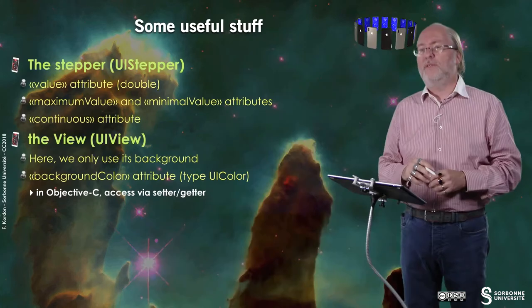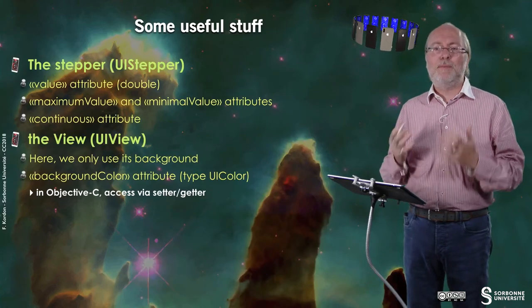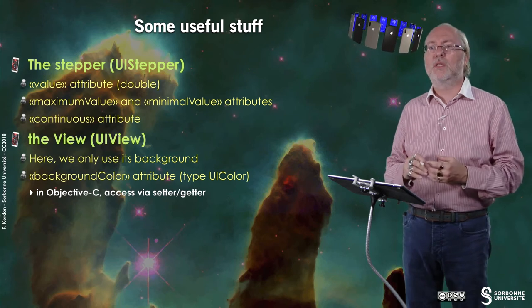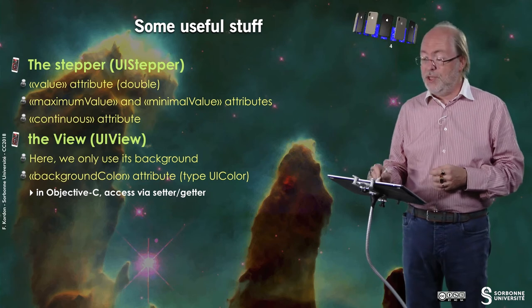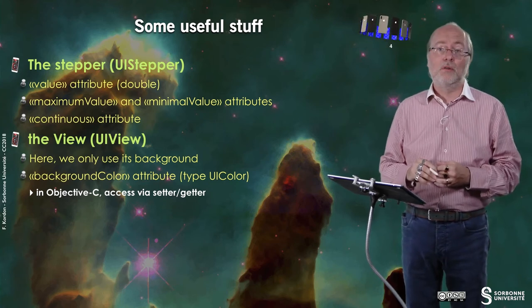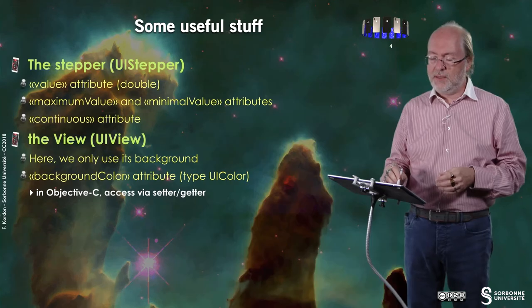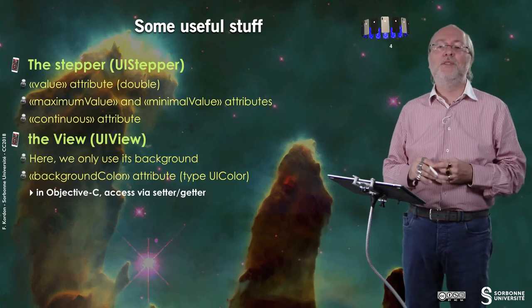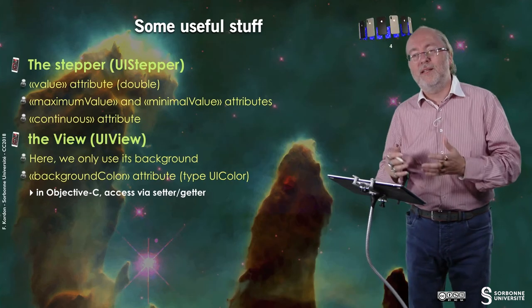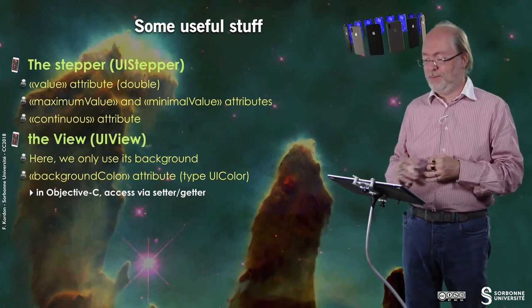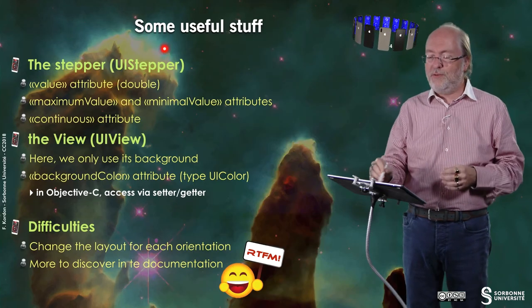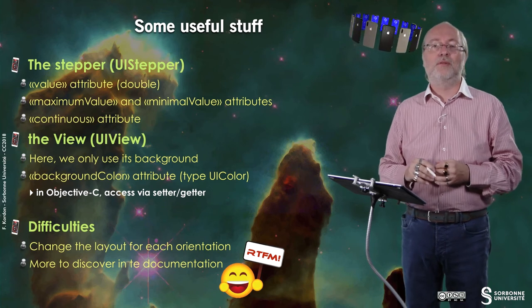You will also manipulate a UIView. In fact you will basically use its background to set up the colors, so you are mostly interested in the backgroundColor attribute, which is of type UIColor. And of course you will experiment that in Objective-C you do not directly access attributes — usually you go through getters and setters. So the difficulty here is another look at the documentation for the UIStepper and the UIView.